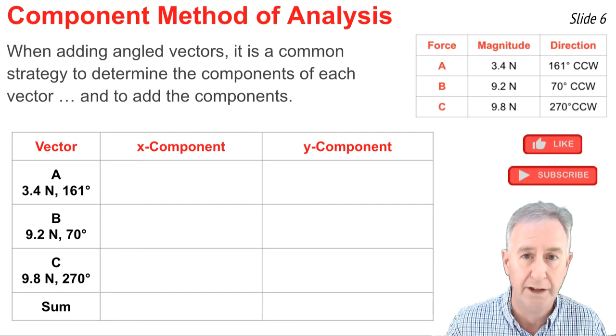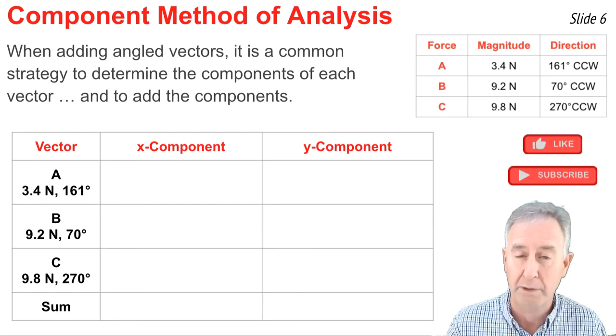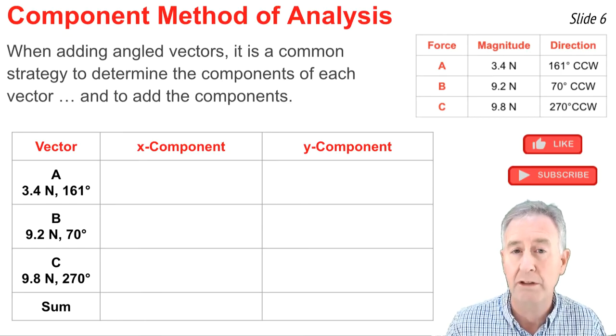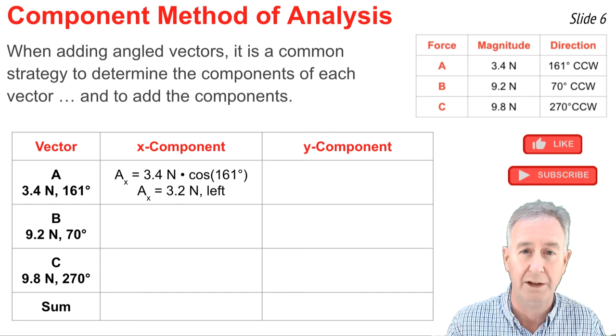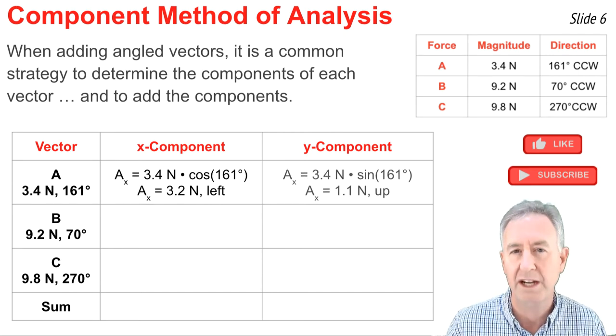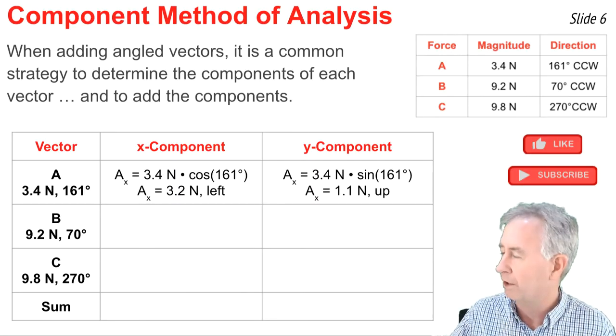I have to calculate these component values. The fact that I have the counterclockwise angles from east makes the method quite easy. I'm going to go the magnitude of the vector times the cosine of the angle to get the x component, and the magnitude of the vector times the sine of the angle to get the y component.